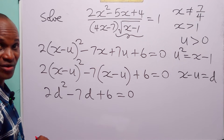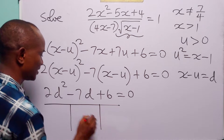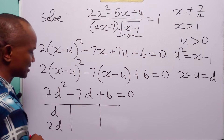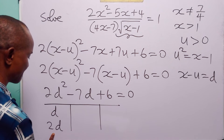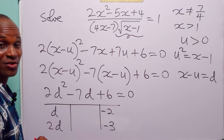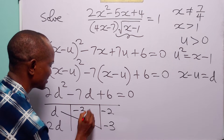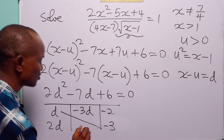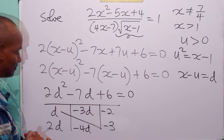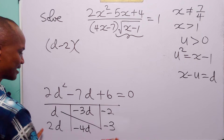We can solve this quadratic equation by factorization. Since the coefficient of d squared is not 1, let us use the table method. The factors of 2d squared are d and 2d. The factors of plus 6 — since the middle term is negative, let these be minus 2 and minus 3, because minus 2 times minus 3 is still plus 6. Then d times minus 3 is minus 3d, and 2d times minus 2 is minus 4d, and minus 4d minus 3d is minus 7d. So we factorize as (d minus 2)(2d minus 3).